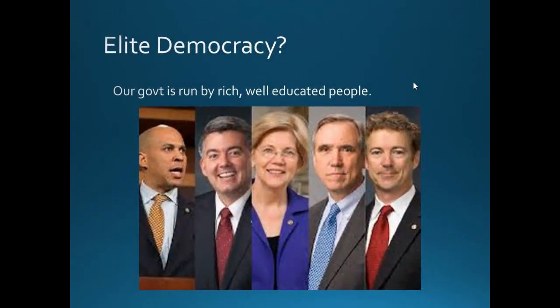Elite democracy is when representatives — who happen to be richer and more educated than we are — make decisions in government without asking us. For example, we didn't vote to give Ukraine 70 billion dollars in aid — most of these representatives did, because they have foreign policy experts and military experts making decisions for us. Anytime the government makes a decision without consulting the people, that would be elite democracy.